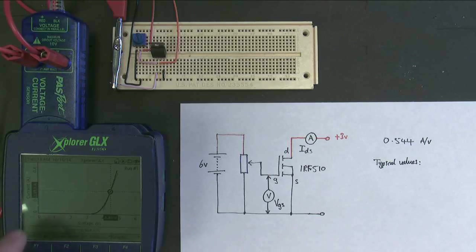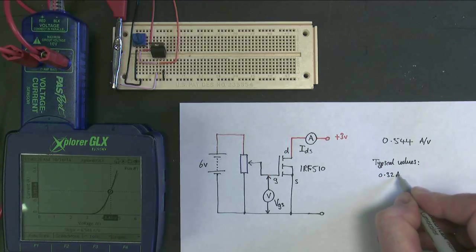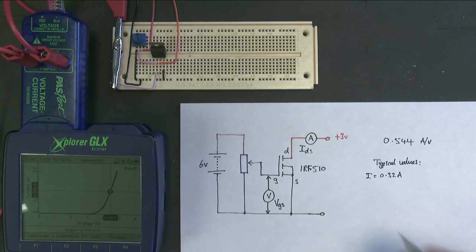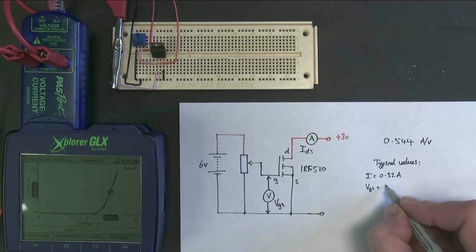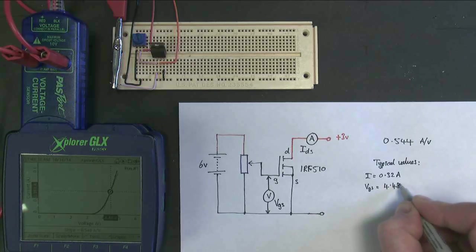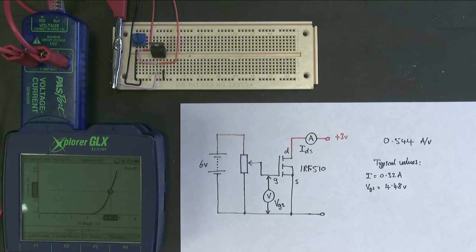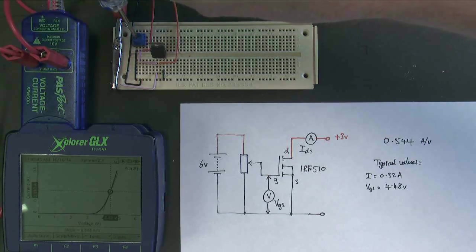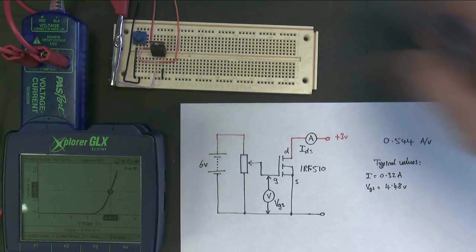So I'll write these down. So here I have, this one here is reading 0.32 amps. And my gate source voltage there is 4.48 volts. And we're going to use these two values to calculate something about the MOSFET itself. What I'm going to do now is I'm going to just turn the gate source voltage back down to 0, because what I don't really want to do is have the MOSFET catching fire halfway through the next calculation.